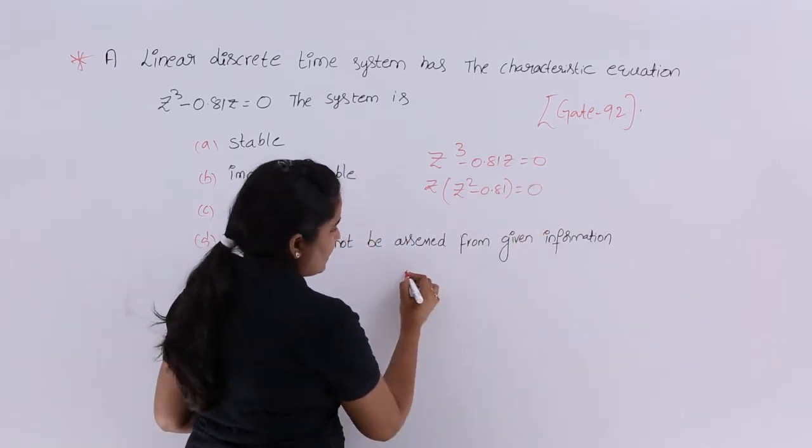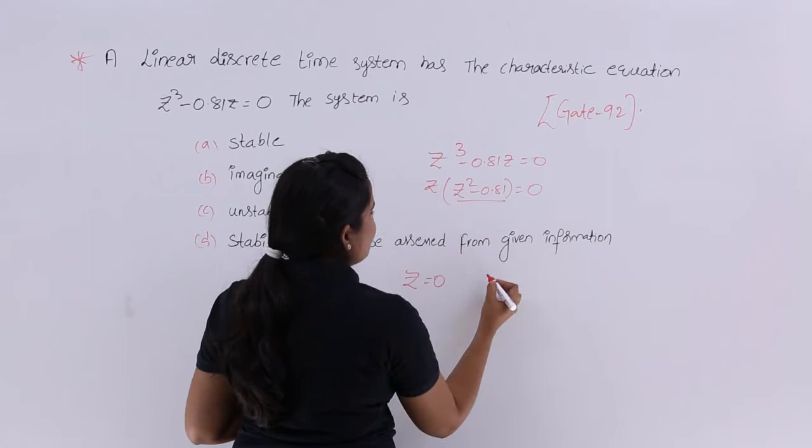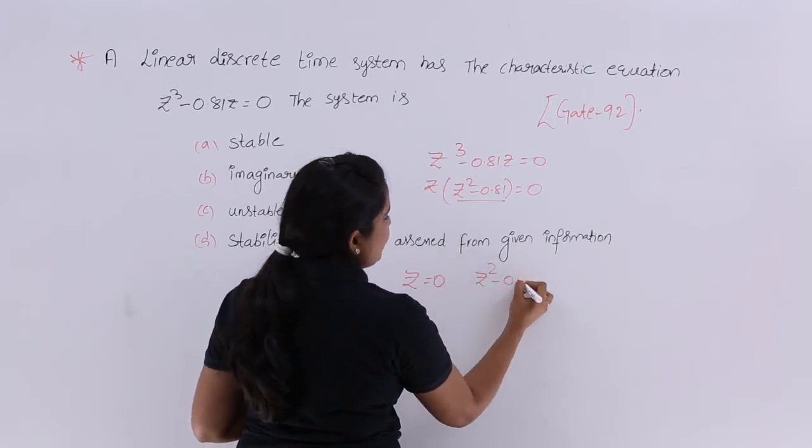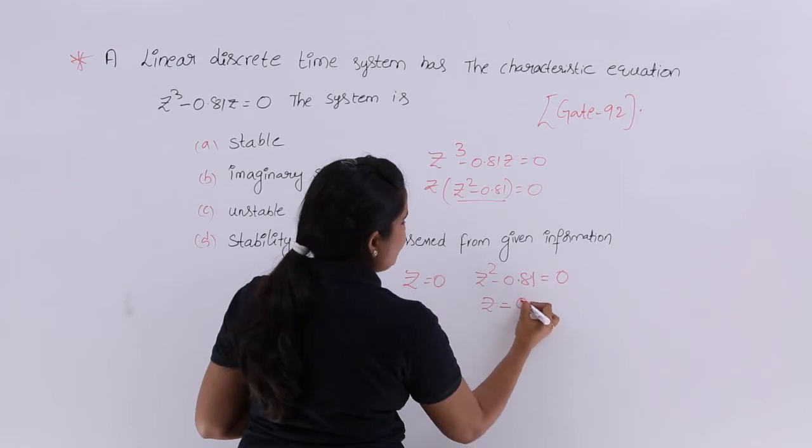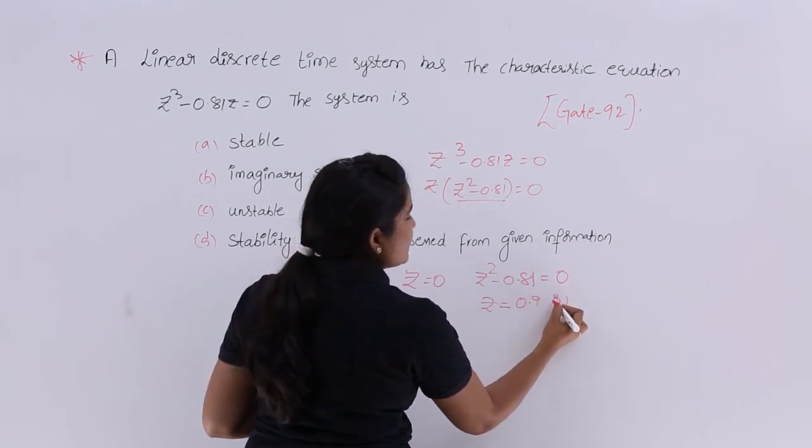Here the poles are Z = 0, and if you equate Z² - 0.81 = 0, you are going to get Z = 0.9 or -0.9.